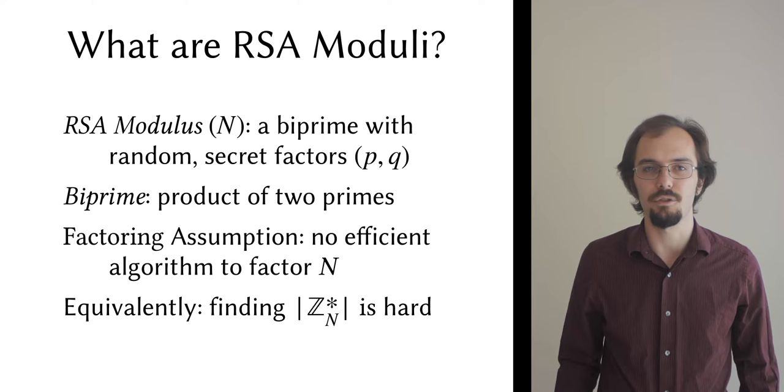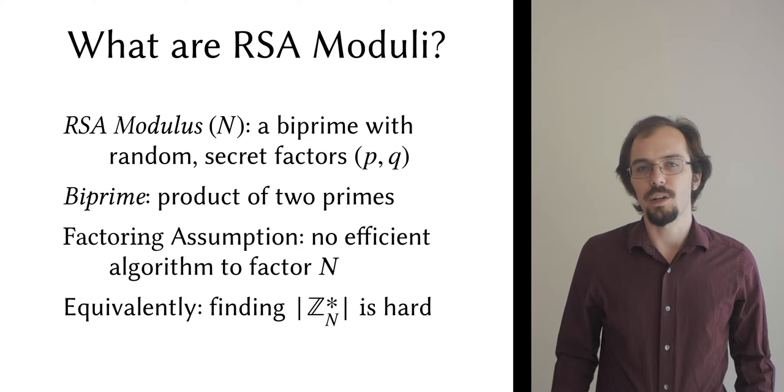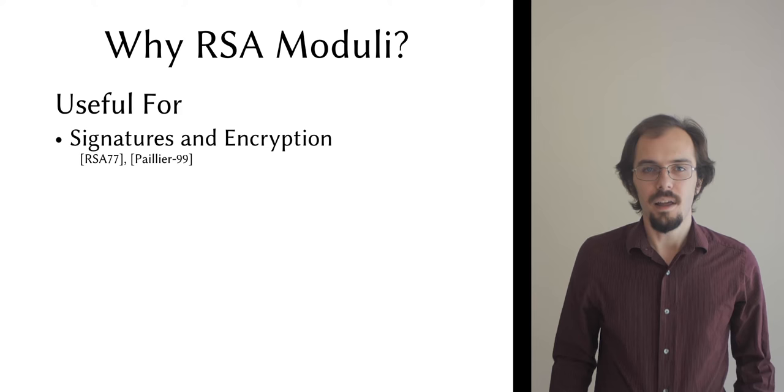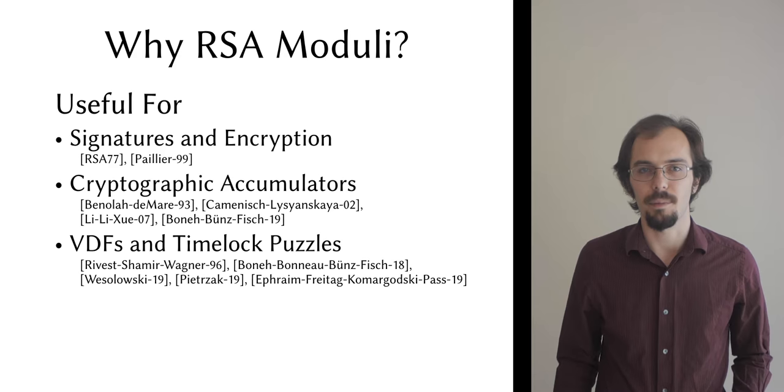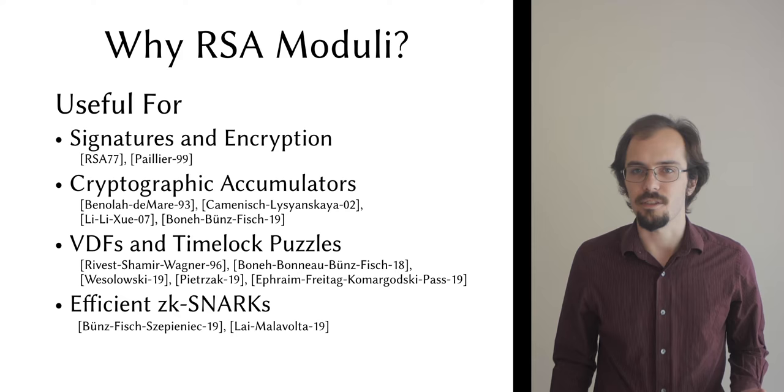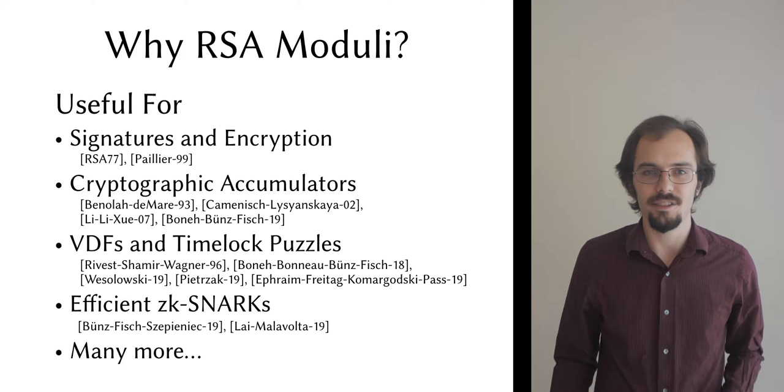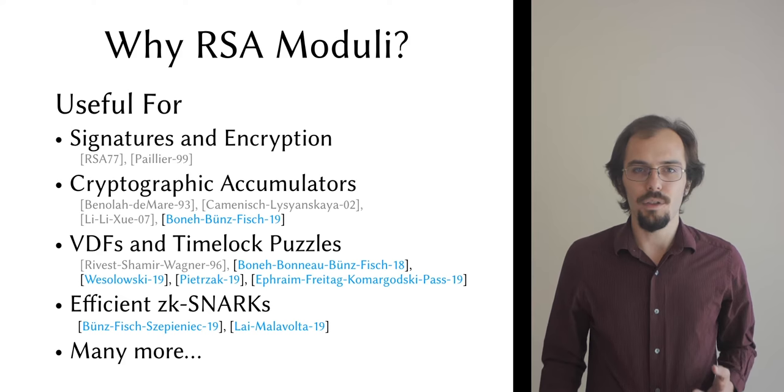This makes RSA moduli useful for a huge range of applications. Of course, they can be used to construct signature schemes and various kinds of encryption, but they're also useful for building advanced primitives such as cryptographic accumulators, time-lock puzzles, verifiable delay functions, and recently some kinds of highly efficient zero-knowledge argument systems. This is far from an exhaustive list, and amazingly, although RSA is one of the seminal asymmetric cryptosystems, many of these applications are very recent. In fact, all of the ones I've highlighted here were published in the last two years. They all use RSA moduli as part of their trusted setup.